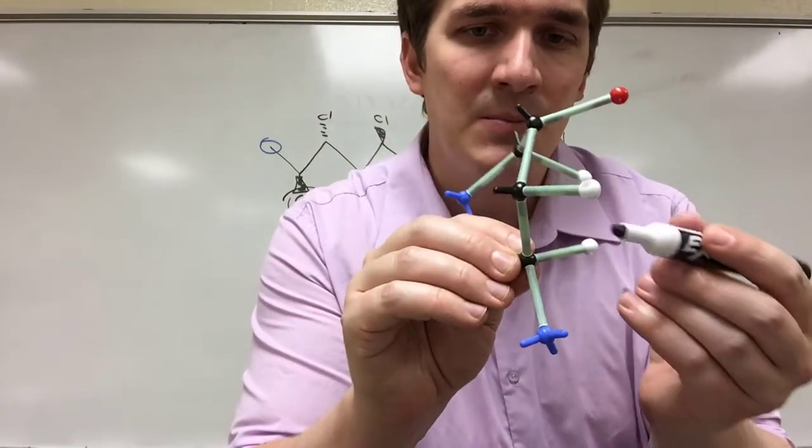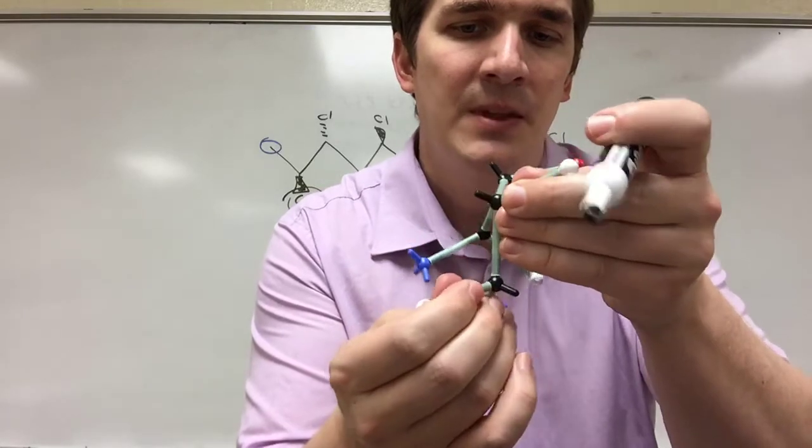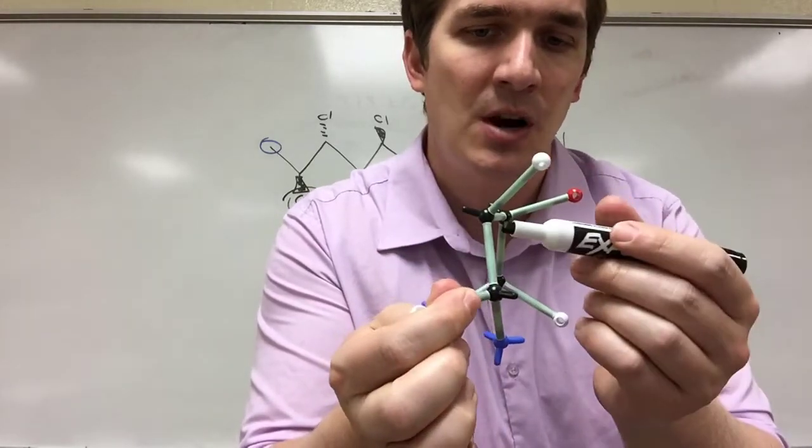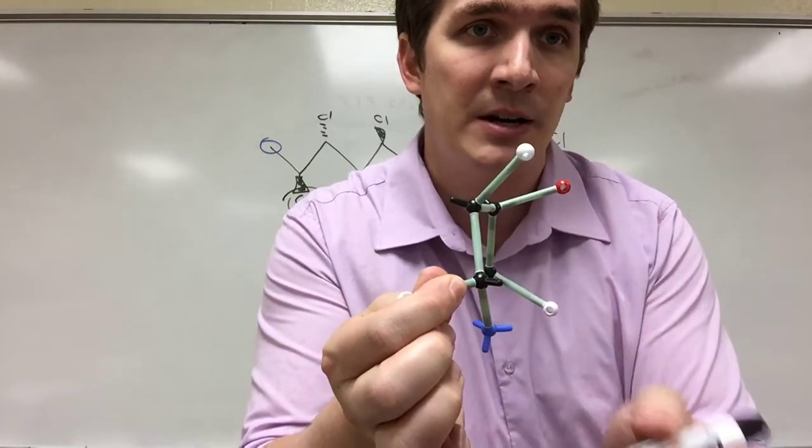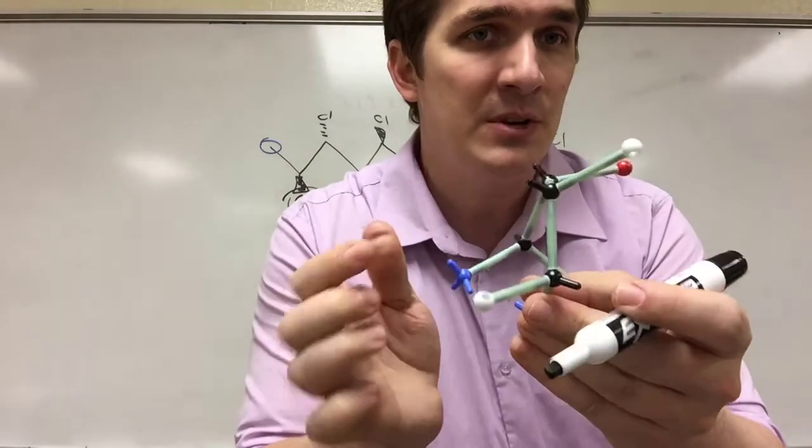If we go down to the last one, again, same problem. This is coming out, this is coming out. We need to rotate it. So this way, the two carbons above and below the carbon we're looking at are actually going back into the board, coming towards me. And we see we've got a chlorine on the left.